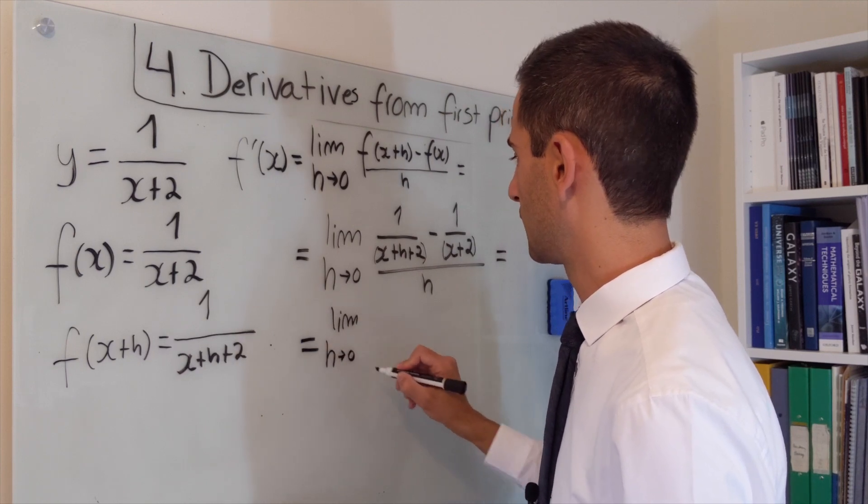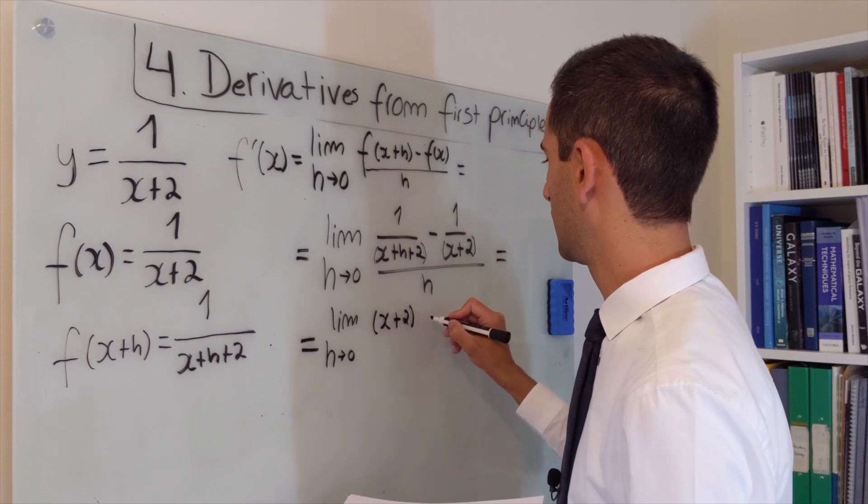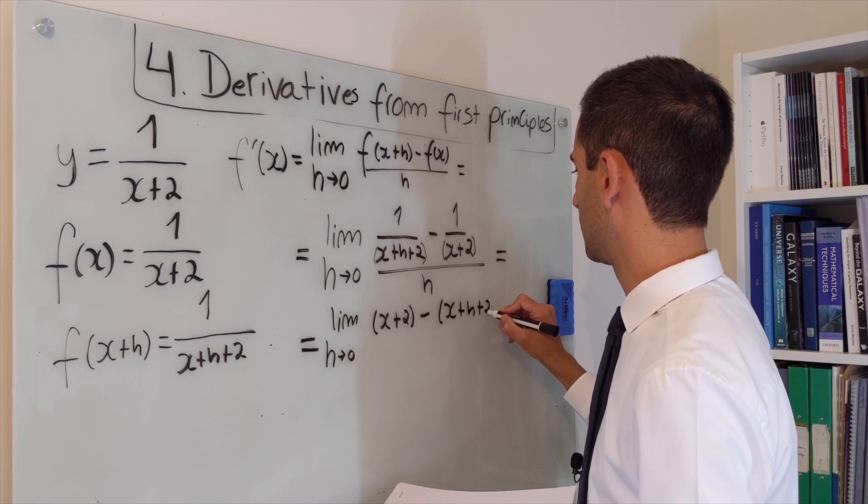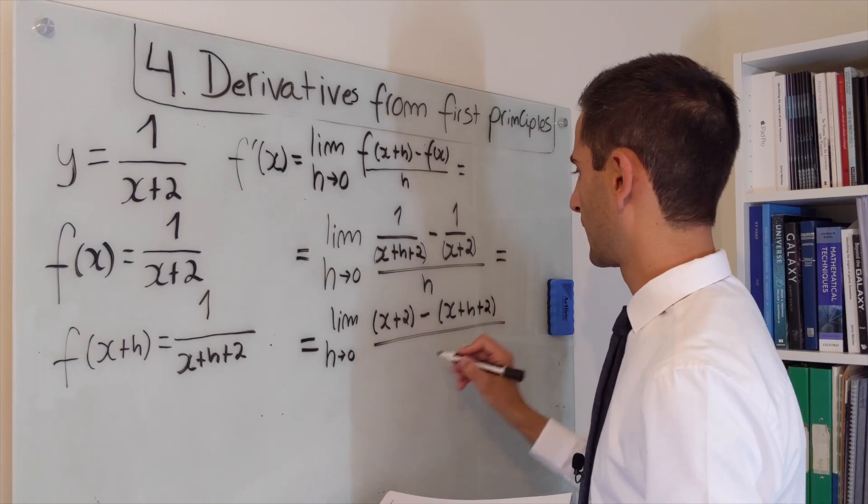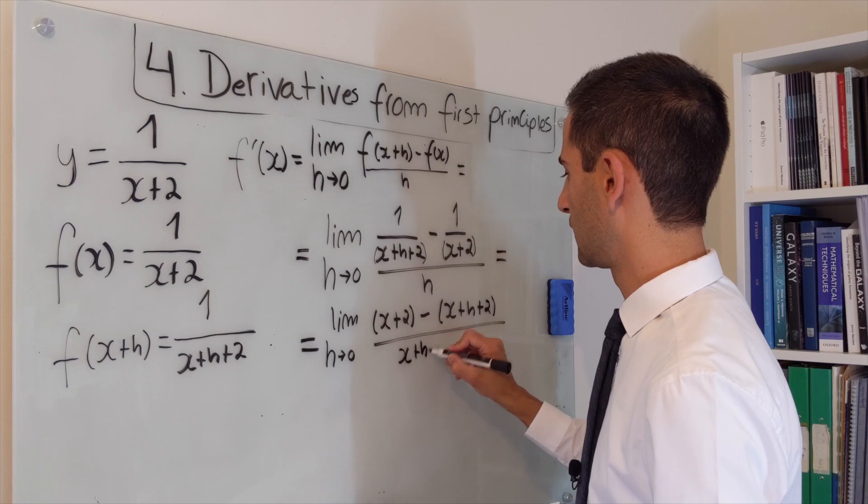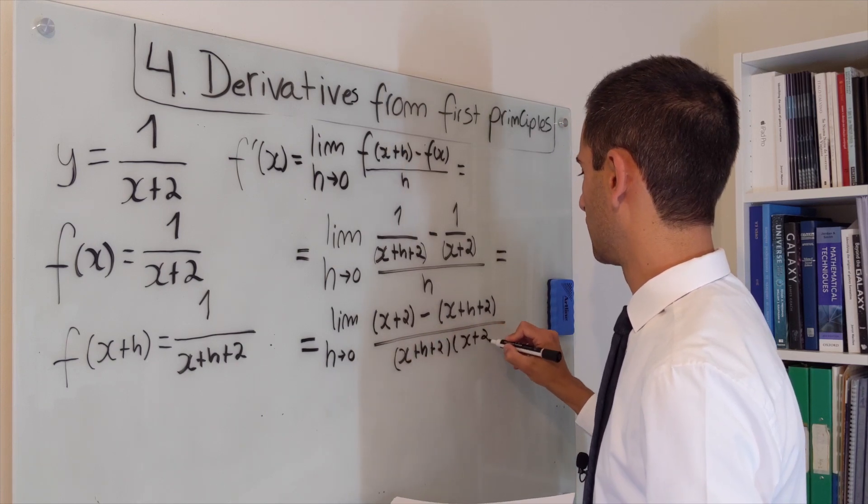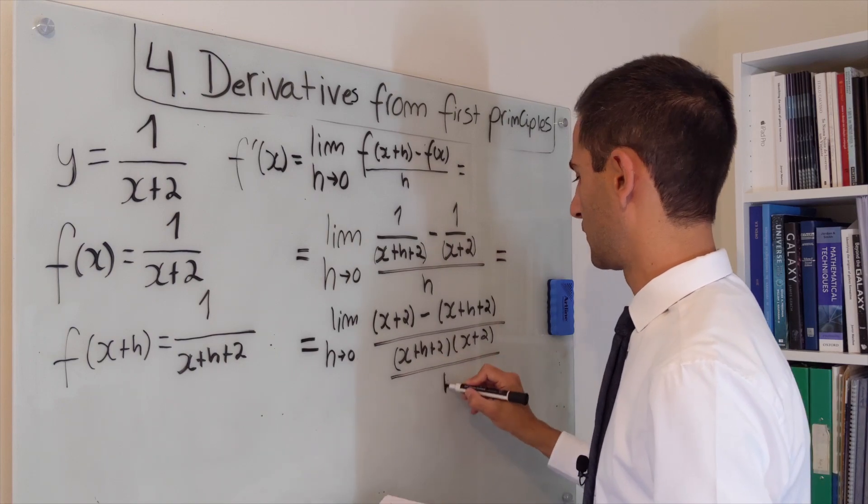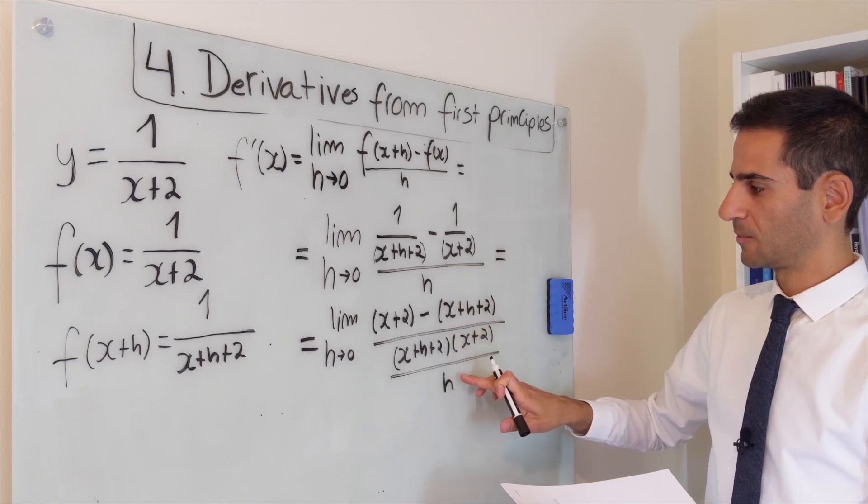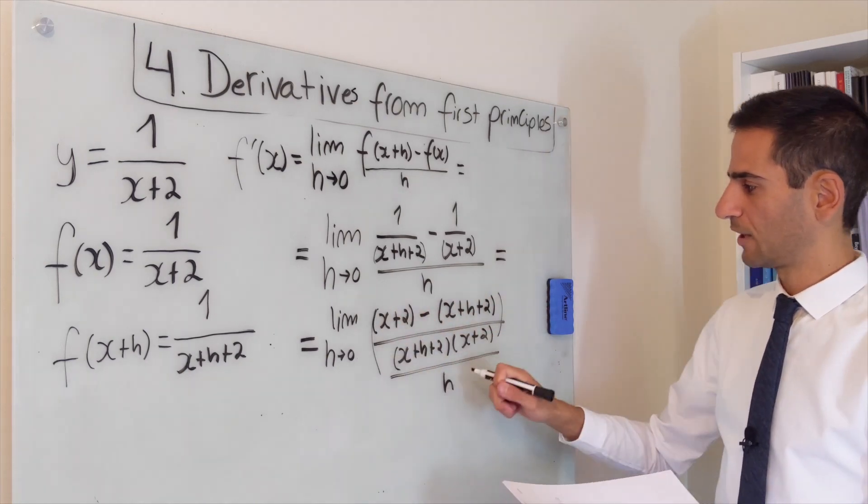So this becomes the limit when h goes to 0 of x plus 2 minus x plus h plus 2. And then at the bottom, we get x plus h plus 2 times x plus 2 over h. What we can also do is understand that this is the same as multiplying by 1 over h.